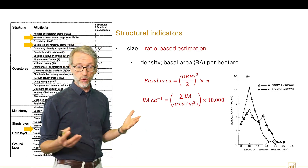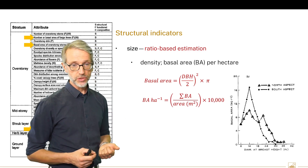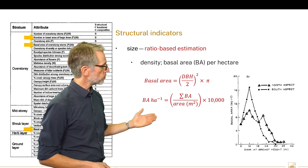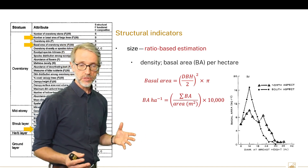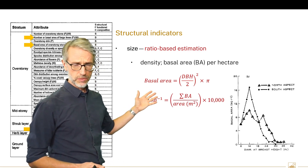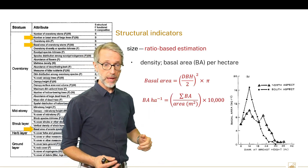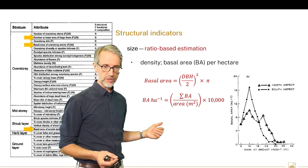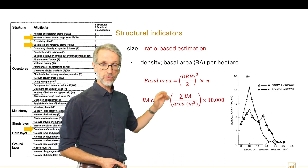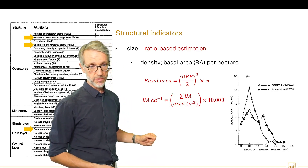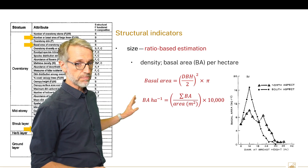Basal area is calculated using the sectional area of a circle — the key assumption being that our measurements describe a circle. We wrap a diameter tape around a tree, divide by two to give the radius, square that, and multiply by pi to give the basal area of a stem. That basal area can be summed across a plot: the sum of basal areas for individual trees on a plot, divided by the area of the plot in metres squared, multiplied by 10,000, gives the standard metric of basal area per hectare.